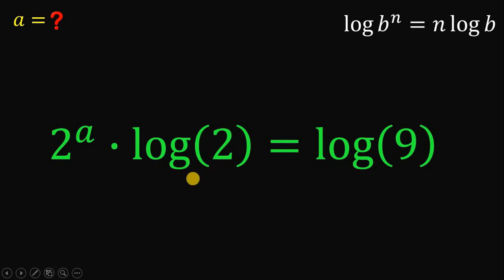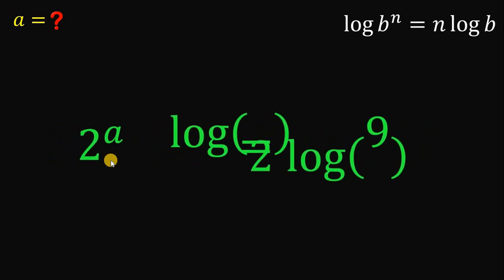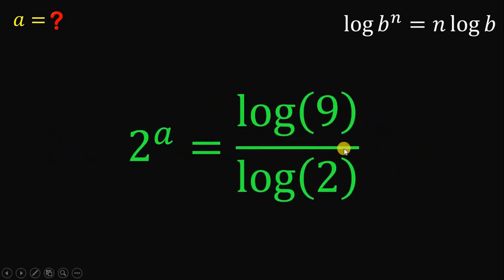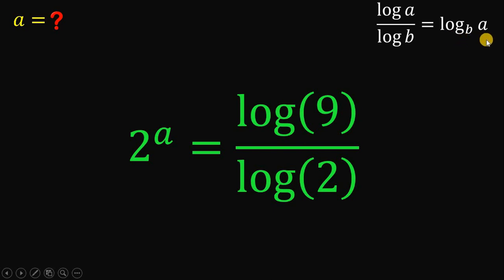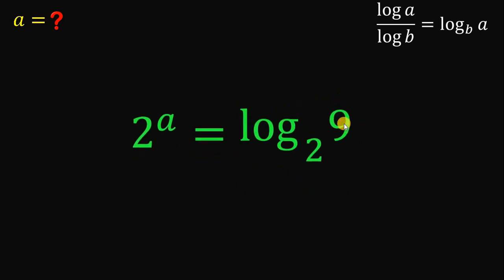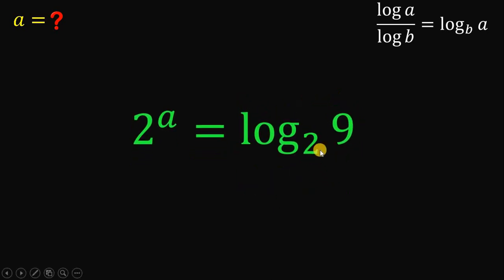Now, to isolate the variable A, what we're going to do is divide both sides by logarithm of 2. Take note that if we have logarithm of A over logarithm of B, it is equivalent to logarithm of A to the base of B. Therefore, the right-hand side of our equation can be written as logarithm of 9 to the base of 2.